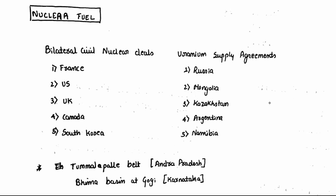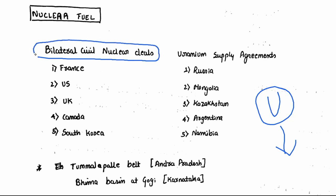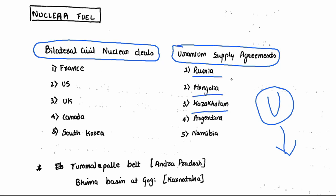The fuel for nuclear reactors is uranium. India has very little uranium, so we import it from other countries. We have two types of arrangements: bilateral civil nuclear deals and uranium supply agreements. The supply agreements are with Russia, Mongolia, Kazakhstan, Argentina, and Namibia.